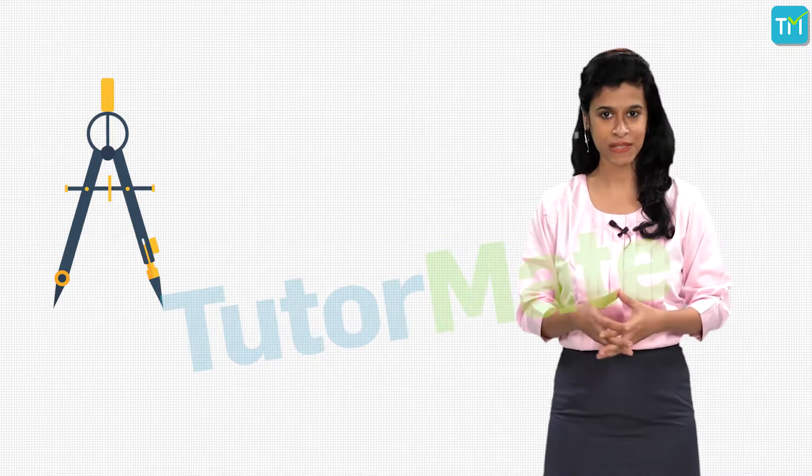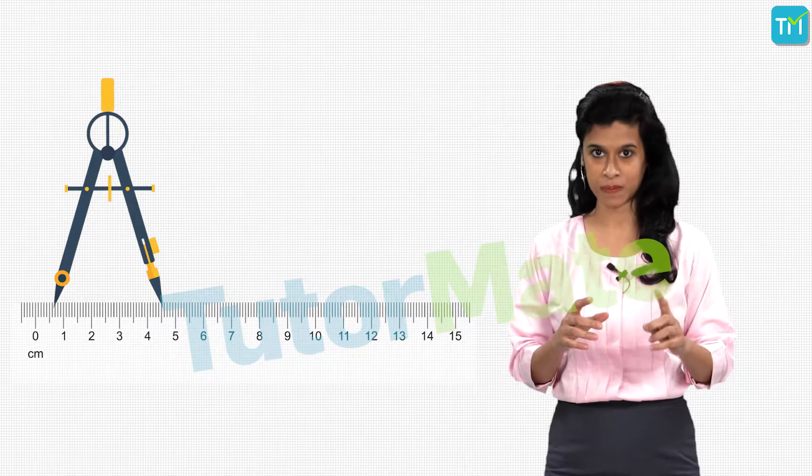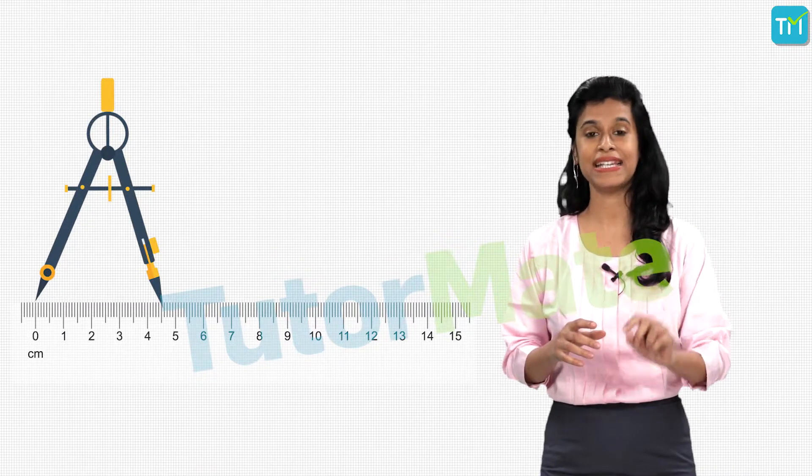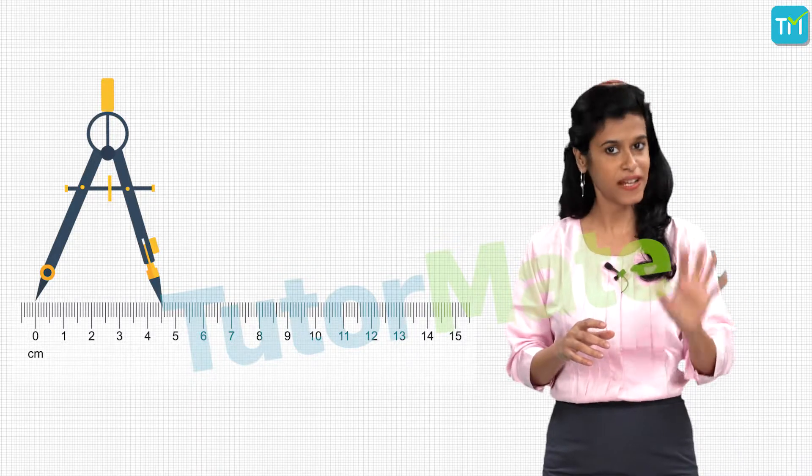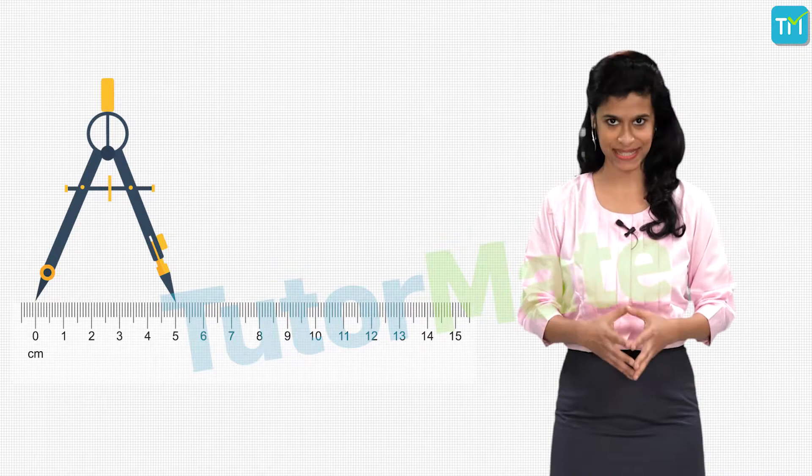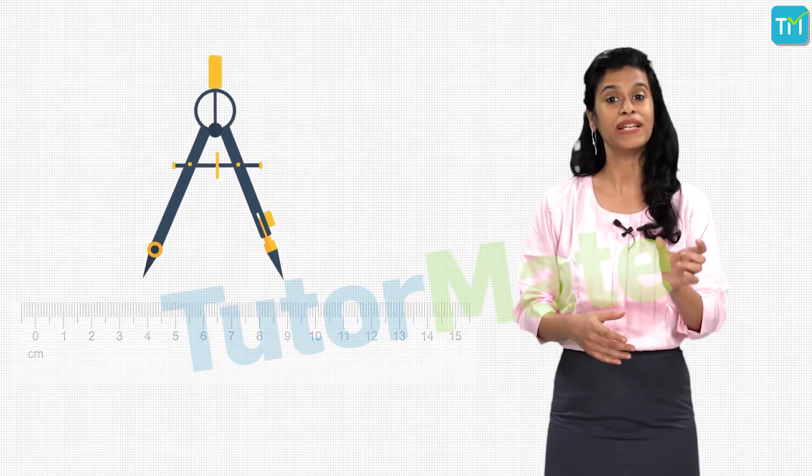So we'll take a ruler and keep one leg of the compass near the zero mark while we extend the other leg till the tip of the pencil touches the 5 centimeter mark on the ruler. While maintaining this distance between the two legs of the compass, we will keep the pointed end on the fixed point that will be the center of the circle.